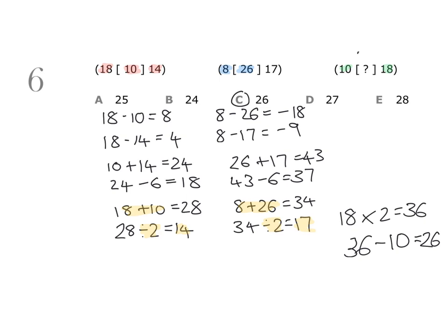Just to show you that this definitely works, we're now going to work it out the same way we did the first and second groups. Now we have the middle number. We take the first number and add the middle number: 10 plus 26 is 36. Then we take the 36, divide it by 2, and that gives us 18, which is the last number. So we're definitely correct.